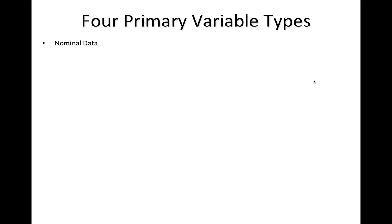We're going to talk about some statistical analyses. Specifically, I want to do a quick refresher of the four primary variable types. We talked about this during the instrumentation module, but I want to go over them again because they matter quite a bit in statistical analyses and decisions about which analyses to conduct. Nominal data are used to describe qualitative attributes of individuals — for example, religion, gender, sexual orientation, or identity.